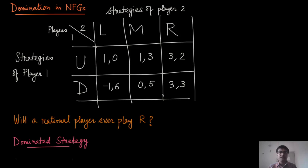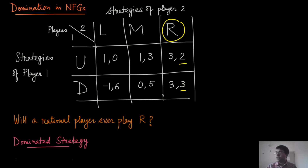We already know the notion of rationality, which means all players are always trying to maximize their utilities. From that point of view, do you think Player 2 will ever play R? It is less likely that Player 2 will play R because if you look at the utilities of Player 2 when playing R versus M, he gets utilities of 3 and 5. Since 5 is larger than 3, and 3 is larger than 2, given any choice Player 2 will always prefer to play M over R, getting a strictly better payoff.